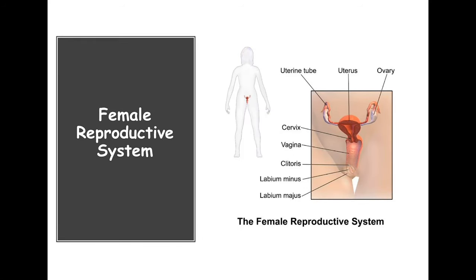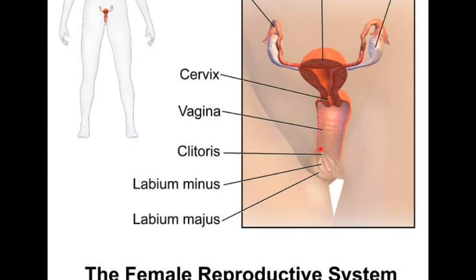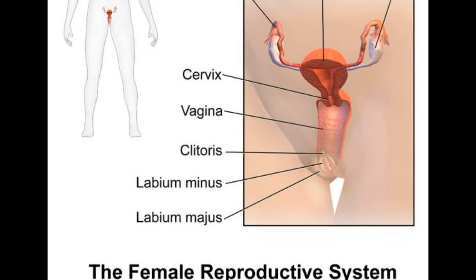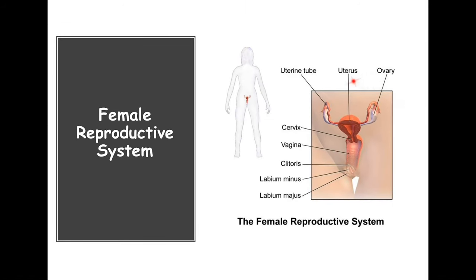This is a very simple diagram showing the basic structures. Here it shows some of the outside region you can see. The labia minora is the smaller portion in between, and the labia majora and the clitoris region. The clitoris came from the same type of tissue as the penis in the male reproductive system. We have our vaginal region, the uterus, the uterine tubes also known as the fallopian tubes on both sides, and we have the ovaries.